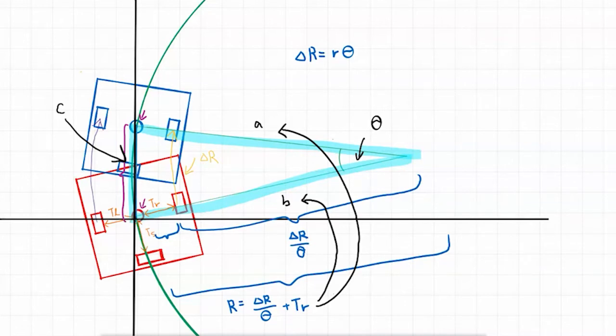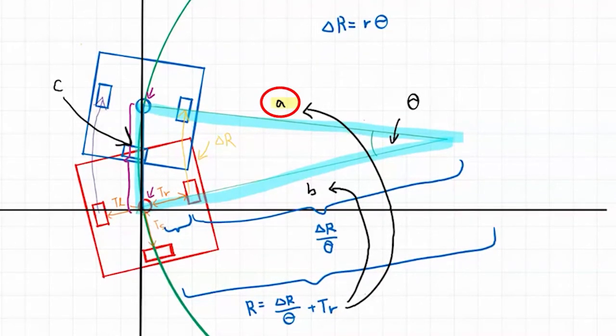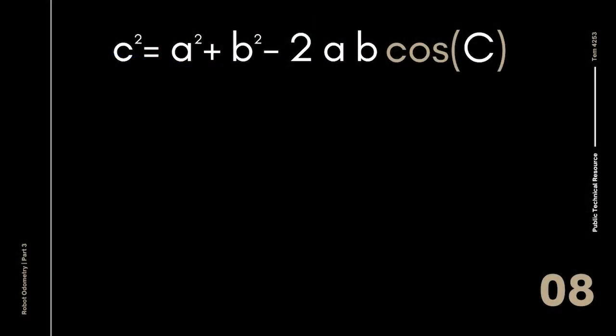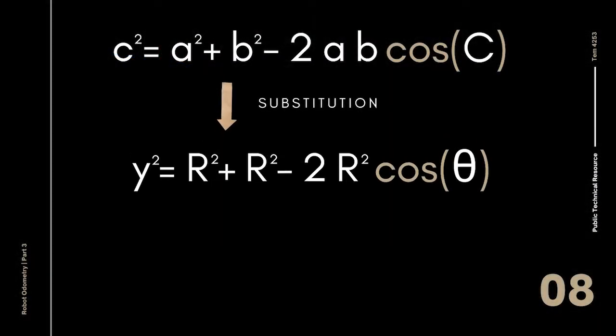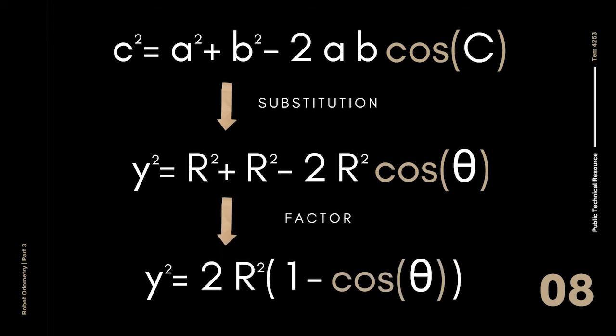Now we can begin calculating the y-coordinate by substituting the known variables in the law of cosines. Length a and length b are simply the radius of the arc, which we just calculated by using this equation. Length c is the length we are trying to find over here, and uppercase C is just the robot's orientation, this angle, that we already know. So now after substitution, our equation looks like this. Our y-coordinate squared is equal to 2 radius squared minus 2 radius squared times cosine theta. We can then factor out the 2 radius squared to get the following.